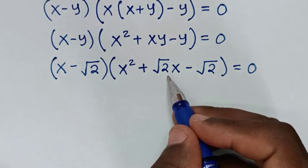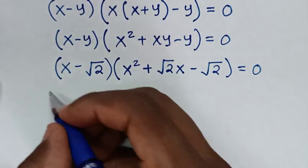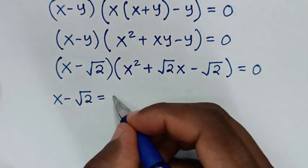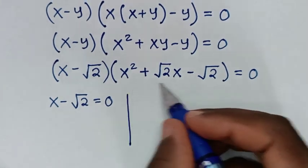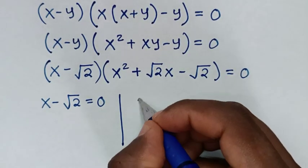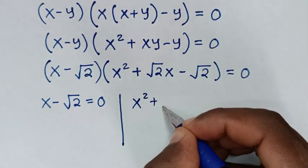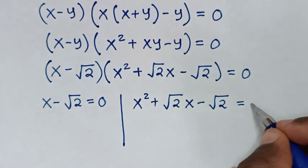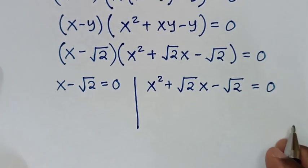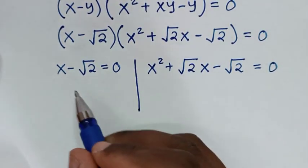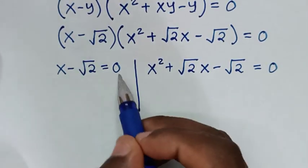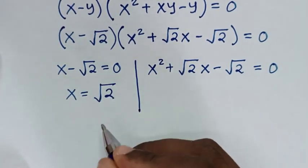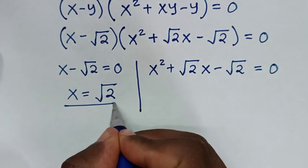We now have two solutions. The first solution is x minus square root of 2 equals 0, and the second is x² plus square root of 2 times x minus square root of 2 equals 0. From the first solution, x equals square root of 2. This is the first value of x.